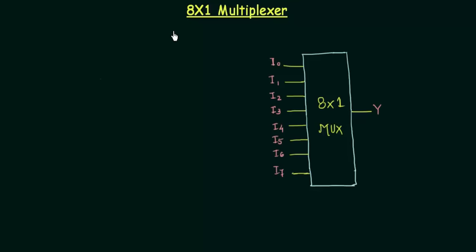In the last presentation we completed 4x1 mux. Now in this presentation we will complete 8x1 multiplexer. So the first thing that we have to see is the number of data input lines and it is 8 in this case.